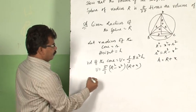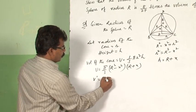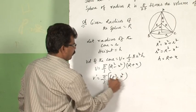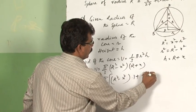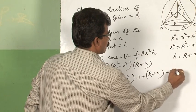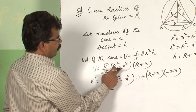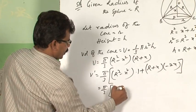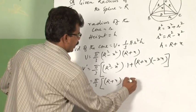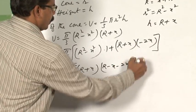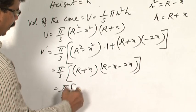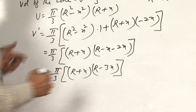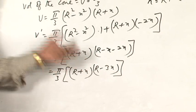Now we will differentiate with respect to x. Therefore, V dash is equal to pi by 3. Applying the product rule: first function times derivative of second function is 1, plus second function times derivative of first function which is minus 2x (since the derivative of R squared minus x squared is minus 2x). If you simplify, that is equal to pi by 3 times (R plus x) as common, giving (R minus x) and minus 2x. Further simplifying: V dash equals pi by 3 times (R plus x) times (R minus 3x).